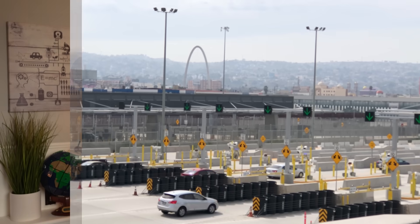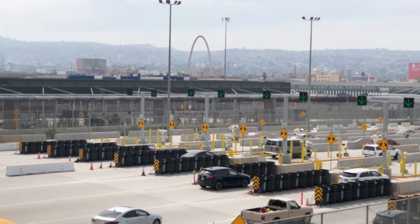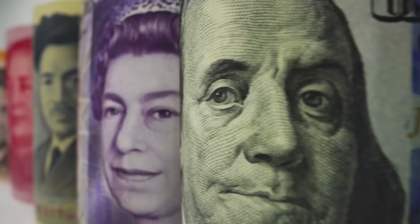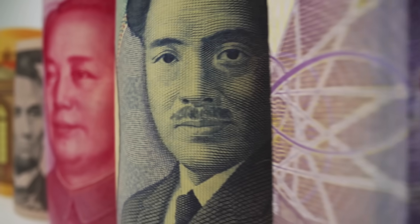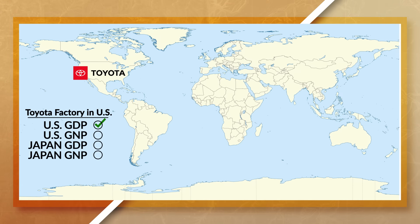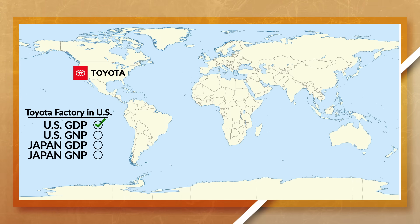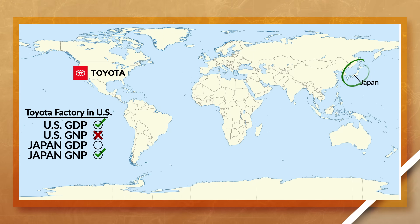If a country's GNP is larger than its GDP, it could mean that there is a significant amount of citizens living abroad, or that there is a lot of foreign investment and production happening inside the country's boundaries. To illustrate this: if Toyota builds a factory in the United States to produce cars, that is part of the United States' GDP since production is happening domestically. However, Toyota is not a U.S.-based company, so this production would not be part of the United States' GNP, and instead would be part of Japan's GNP, since Toyota is a Japanese company.